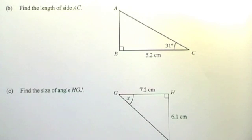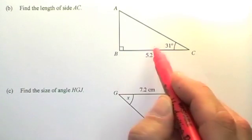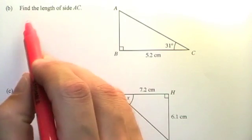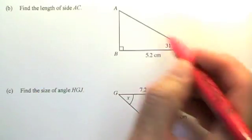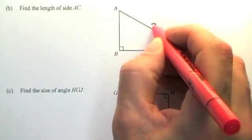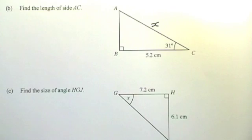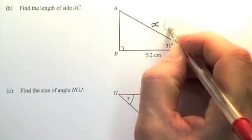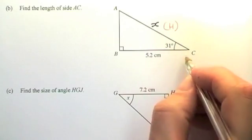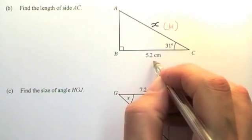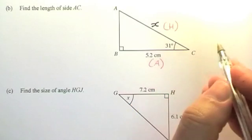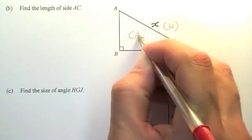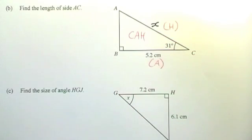Part B of this question, it's another right-angled triangle where an angle is labeled, so it's trigonometry. It asks for finding the length of side AC, AC is this one here, so I'll label it as X. Now I'll just identify the sides. This is the longer side, so that's the hypotenuse H. This is the one next to the angle, so that's the adjacent side. So this is CAH, a CAH TOA triangle.